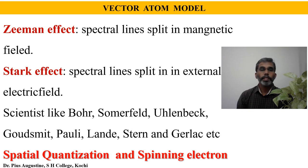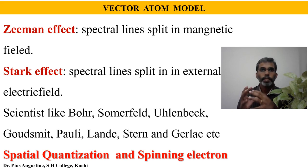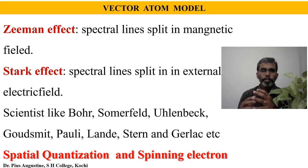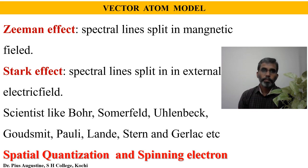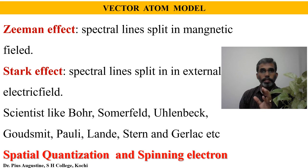So here we will see the vector atom model. In physics, or specifically quantum mechanics, the vector model of the atom is a model of the atom in terms of angular momentum. It can be considered as an extension of Rutherford, Bohr, and Sommerfeld's atom models to multi-electron atoms. The above-mentioned old atom models and other theories were unsuccessful in explaining phenomena like the Zeeman effect and Stark effect.